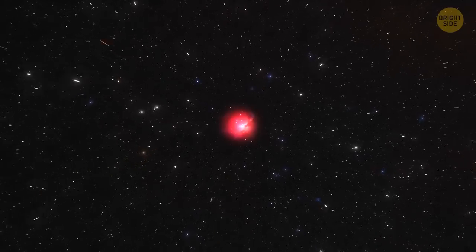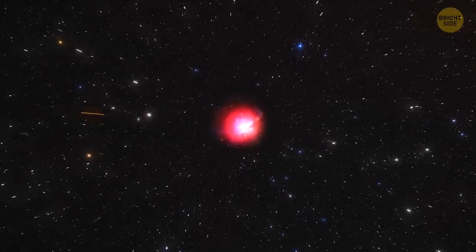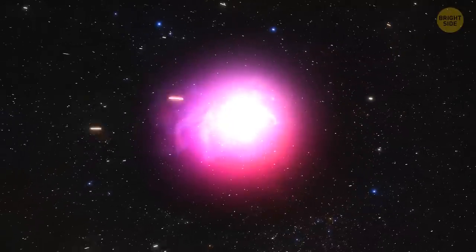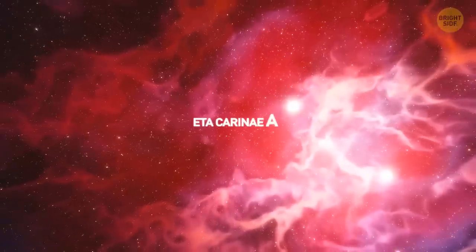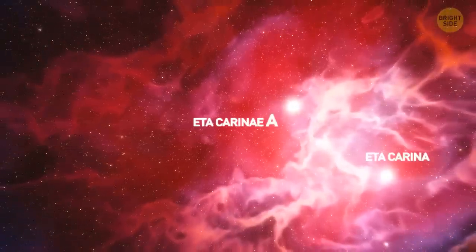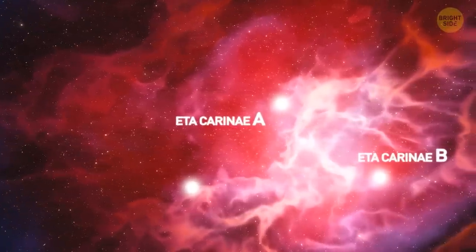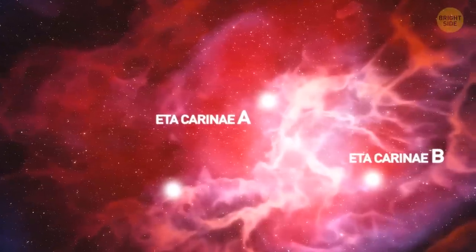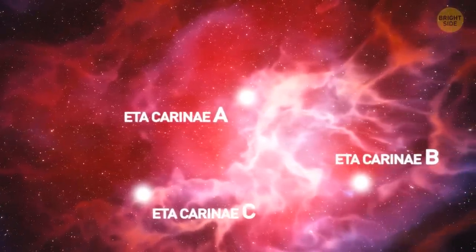Now, listen up. Eta Carinae is currently up to something. It's been brightening again, and is now brighter than at any time since 1864. It's a complex situation. Eta Carinae is really two stars. Eta Carinae A and Eta Carinae B. There's a third star nearby that's also interacting with the double star's dynamics. Now, without looking, I'm guessing it's named Eta Carinae C. Good guess.